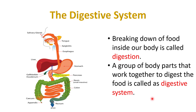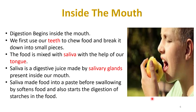Now let's see what happens inside our mouth after eating food. Digestion begins inside the mouth. We first use our teeth to chew the food and break it down into small pieces. After that we mix the food with saliva with the help of our tongue. Saliva is a digestive juice which is made by the salivary gland present inside our mouth. Saliva makes the food into a paste before swallowing, softens the food, and also starts the digestion of starch present in the food.